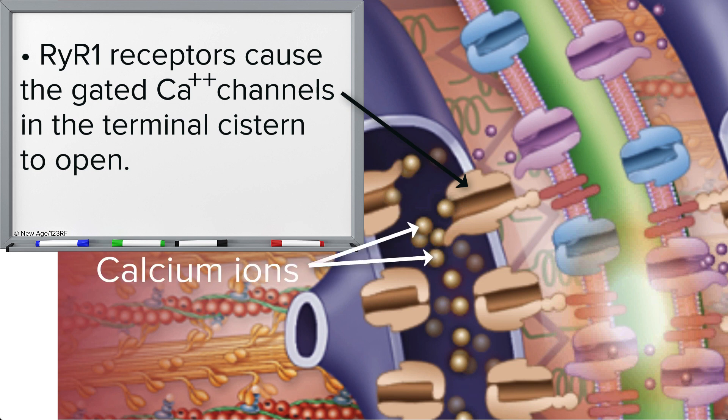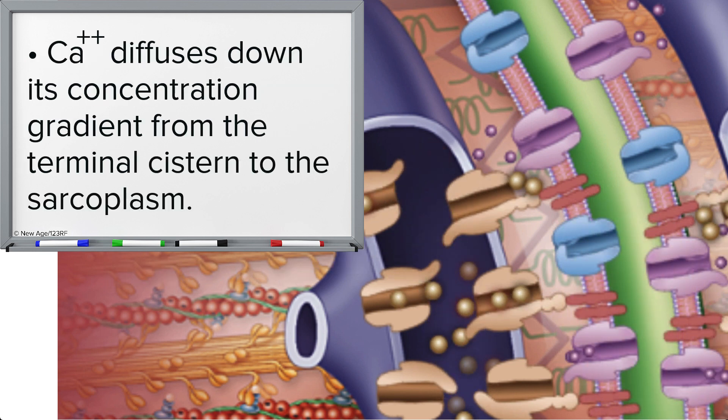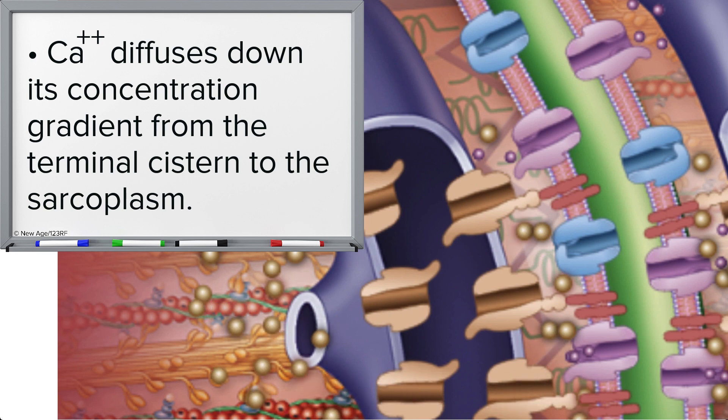Since calcium ions are higher in concentration in the sarcoplasmic reticulum than in the sarcoplasm, they diffuse down their concentration gradient into the cytosol of the sarcoplasm.